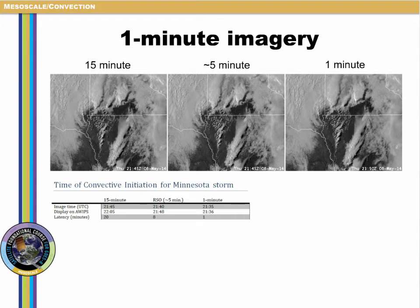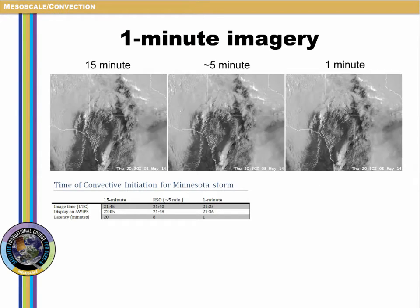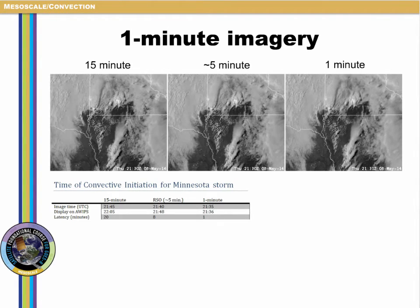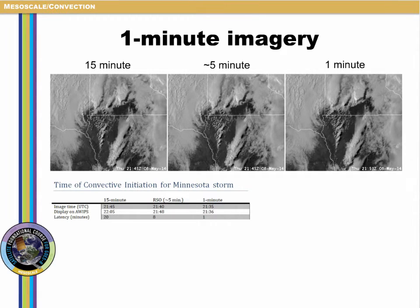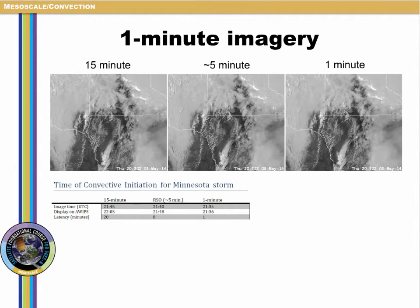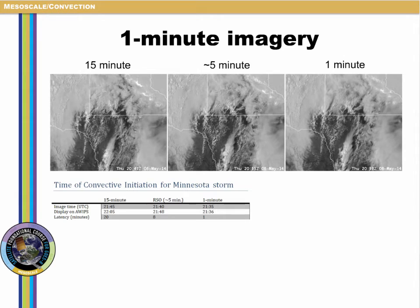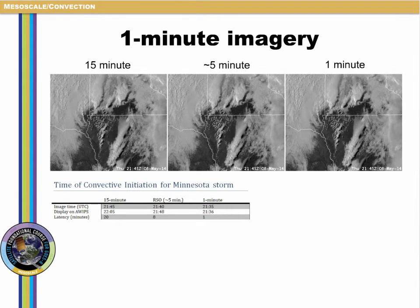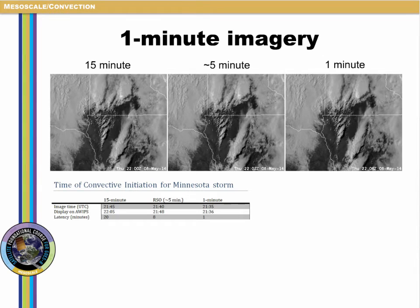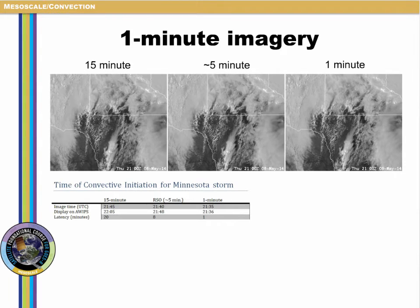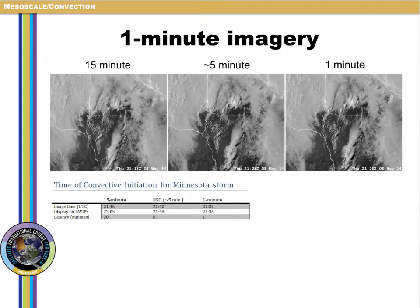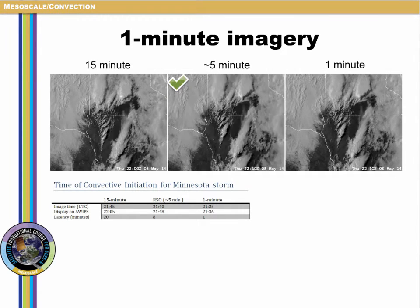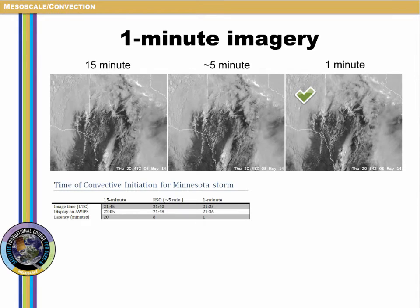Utilizing one-minute imagery on GOES-R will be particularly important for the mesoscale and convective section. To help understand the importance of one-minute imagery, we compare current GOES capabilities with GOES-R in terms of temporal resolution and availability for display on AWIPS. In this animation we see a thunderstorm develop over south-central Minnesota along a boundary. The animation depicts imagery at 15-minute interval, RSO interval, and 1-minute interval.